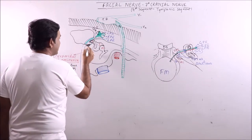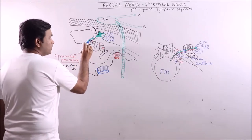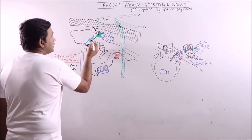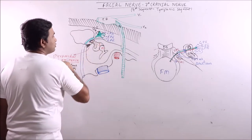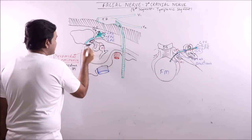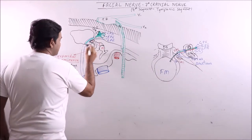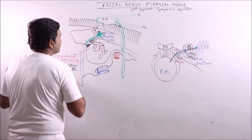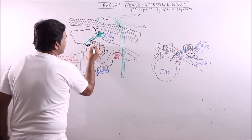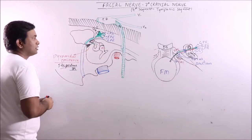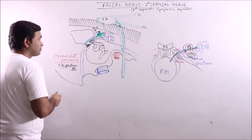What is the significance? Pyramidal eminence is a conical bony projection. It is just behind the oval window and it is hollow. It is having stapedius muscle. The tendon of the muscle is coming out and it is connected to the neck of the stapes.